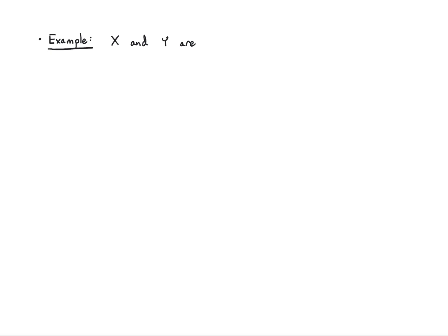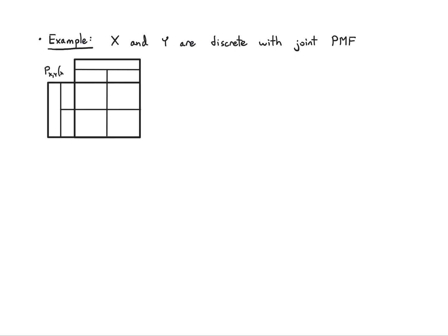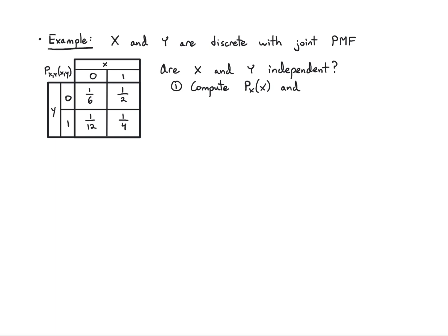Let's do an example. I'll have discrete random variables X and Y, and I'll give you the joint PMF as a table. X and Y each take values 0 and 1. The joint PMF entries are: P(0,0) = 1/6, P(1,0) = 1/2, P(0,1) = 1/12, P(1,1) = 1/4. To verify independence, I need to compute the marginals P(X) and P(Y), then check whether the joint PMF equals the product of the marginals. If so, they're independent; if not, they're not independent.